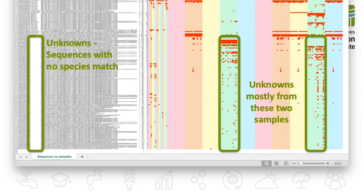Any sequences with no predicted species appear in the bottom half of this report. In this case, two samples contribute to the vast majority of the unknowns. All the other samples had known composition, and were used to build up the database. If monitoring environmental data, this is where you would look for novel species.